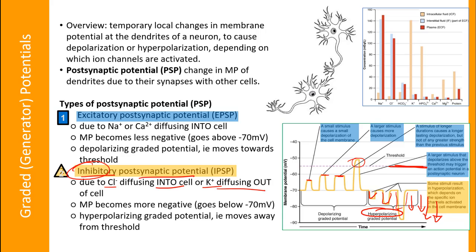If instead chloride or potassium ion channels open, chloride diffuses into the cell or potassium diffuses out, making the membrane more negative — this is called an inhibitory post-synaptic potential (IPSP). It is inhibitory because it makes threshold harder to reach. Some antidepressants and anti-anxiety drugs work by allowing chloride ion channels to open and chloride to diffuse into the cell, inhibiting the likelihood of an action potential being generated and calming the mind in the central nervous system.